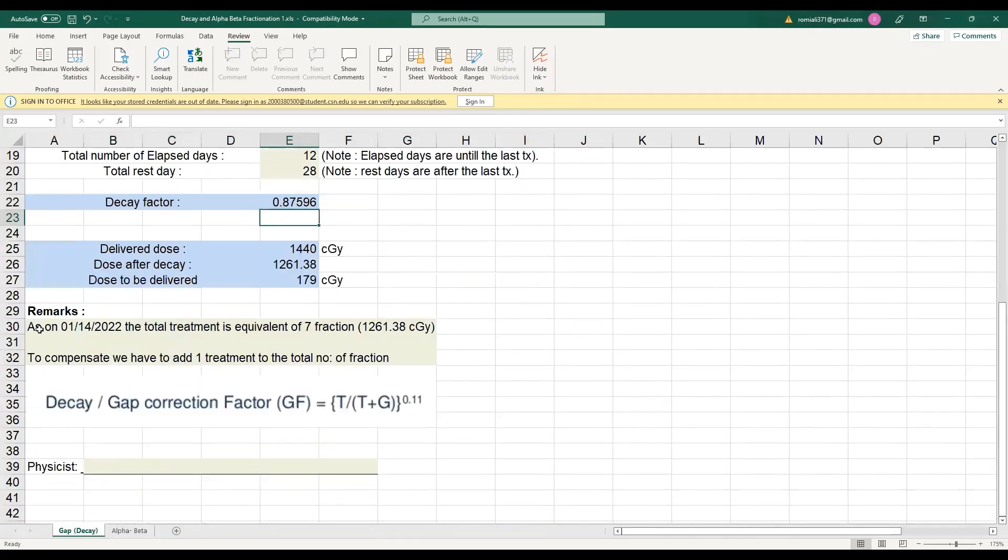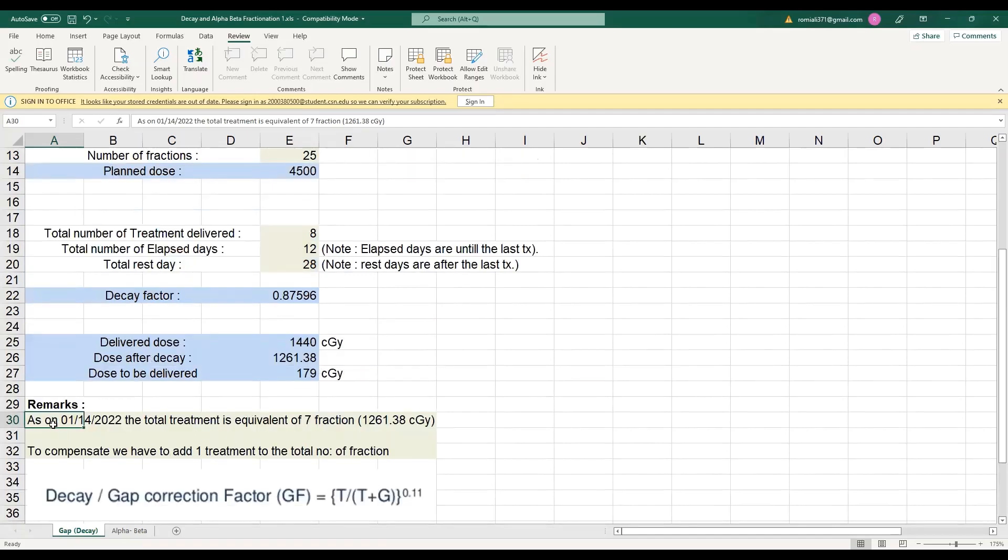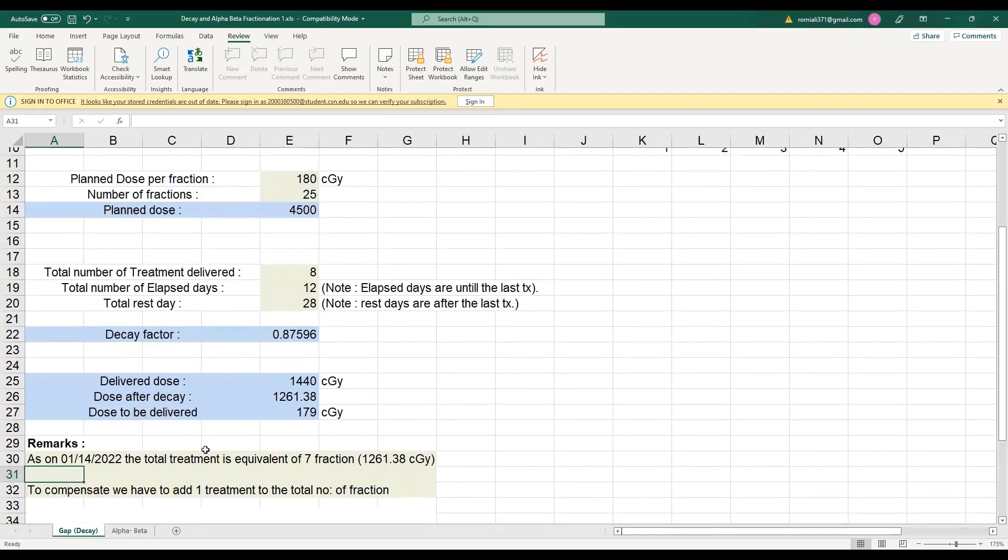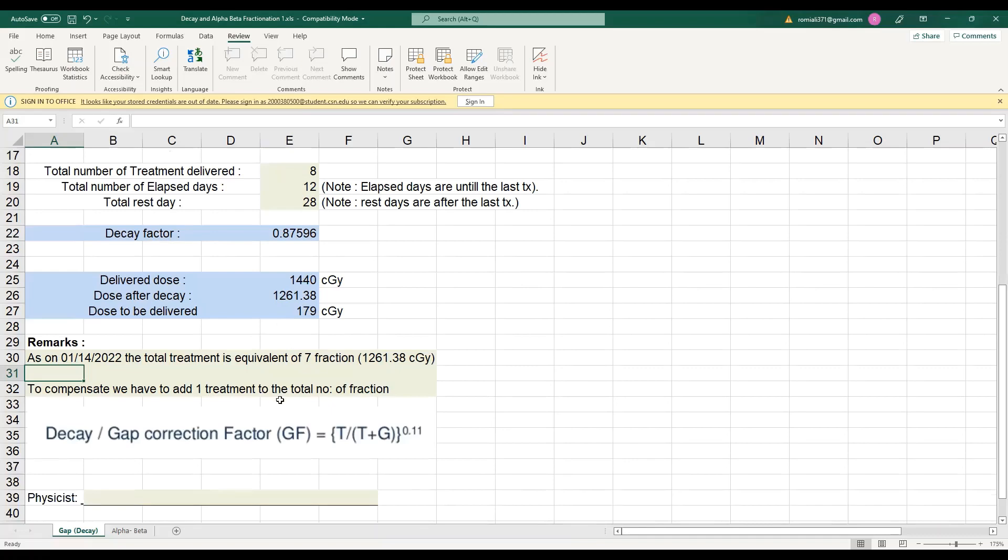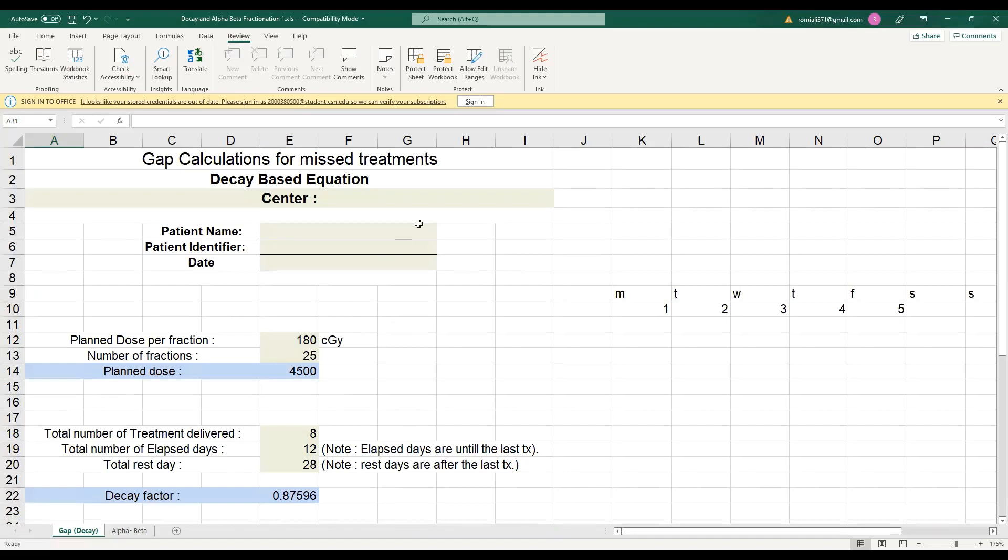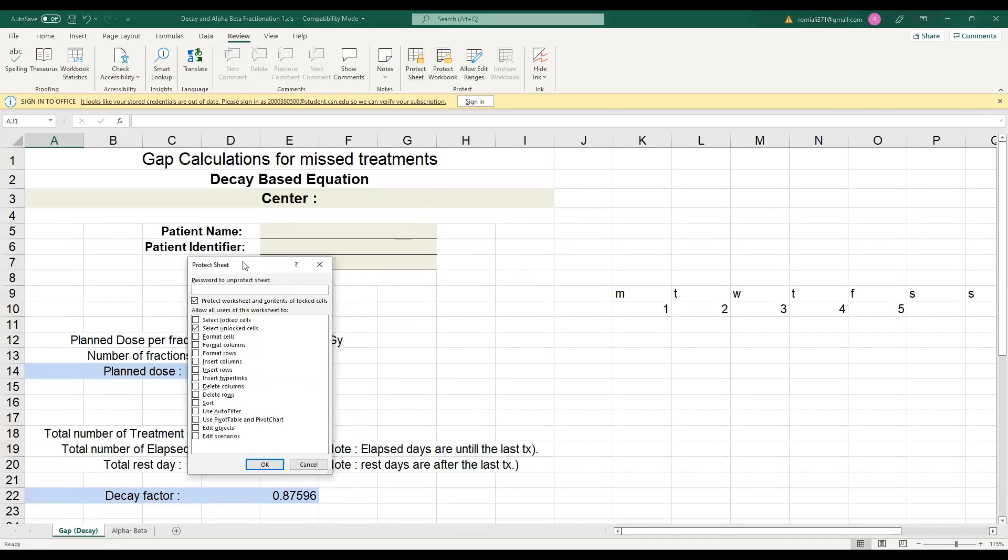Similarly here in the remarks, you can write that the treatment stopped on X day and the patient had Y number of rest days. Patient did not show for Y number of days, and then we changed or we added this much of dose. For me, I always, let's say I do something today on a patient and the patient comes six months later, I have forgotten everything. So if I don't have notes, I don't know what I did and why I did. So it's always good to keep a record so when the patient comes back and you need your record, you have everything in writing and you can refer back to it and see what happened that day.